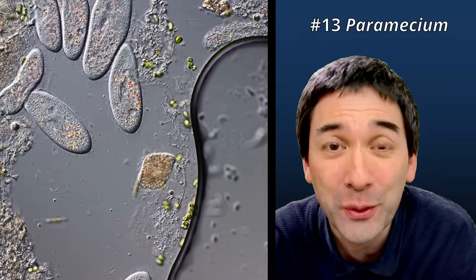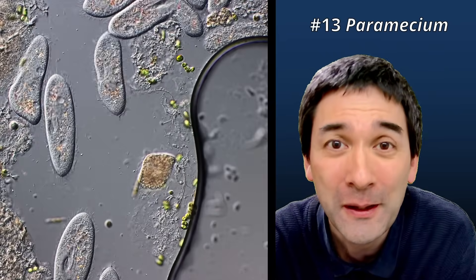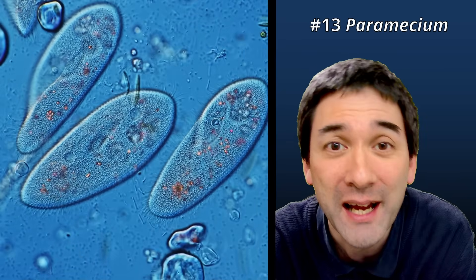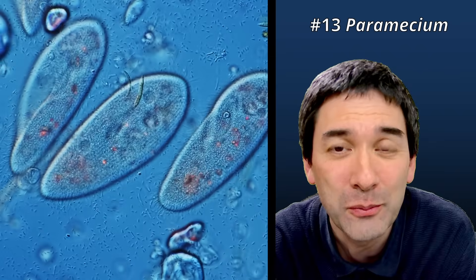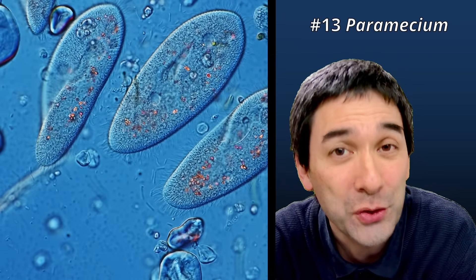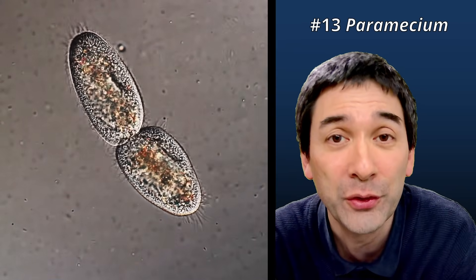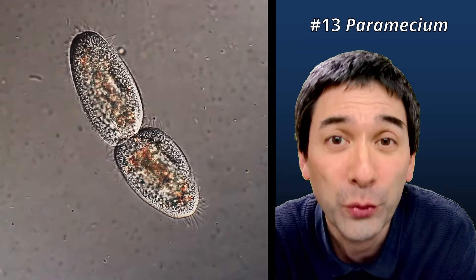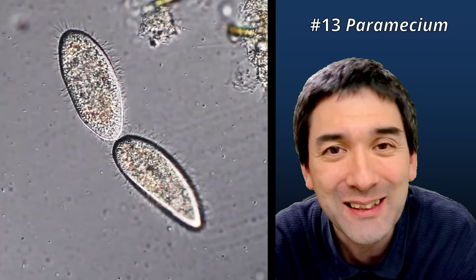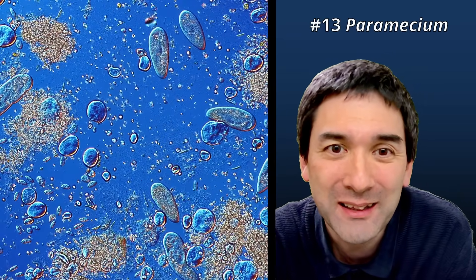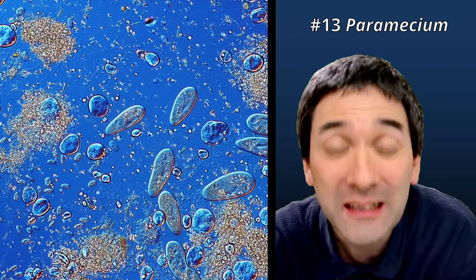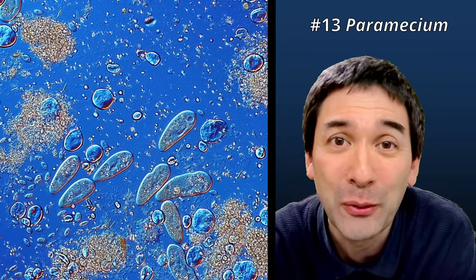We're going to start off with the first one here — this is Paramecium, it's a very common one. It's a single-celled ciliate, and ciliates have tiny little hairs on the surface of the cell. You may be able to see how they beat and move. Those hairs are responsible for not only moving the cell around the water but also gathering food. Here we can already see one of them dividing — you can see they are still connected a little bit at the cilia.